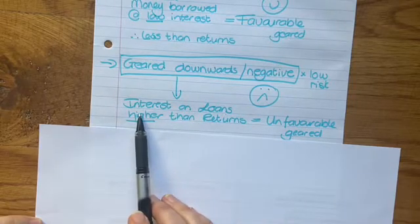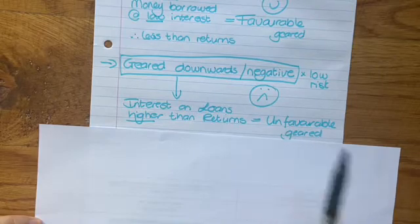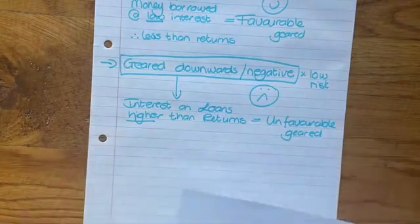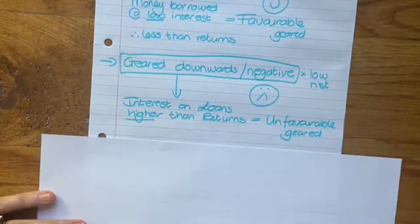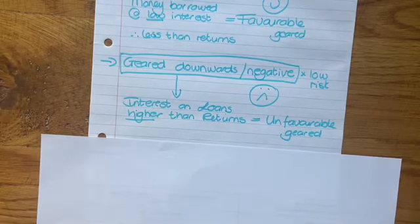It's unfavorably geared. So when you look at gearing, you can think of the interest. And when you're talking about risk and low risk, you look at the bigger picture—it's the actual loan against the equity.